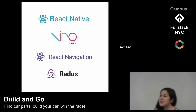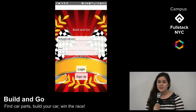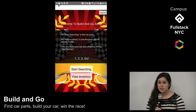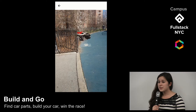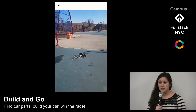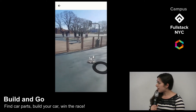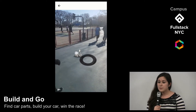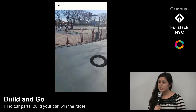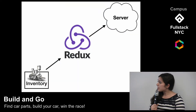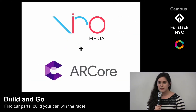To start playing, a user creates an account saved to the database, then is routed to a home screen showing instructions on how to play. Clicking 'Start Searching' begins the AR experience. Once their camera opens and they see the world around them, they can search for parts by moving their camera around. When they find a part, they tap it and it adds it to their inventory. Once parts are added to the inventory, we send the updated inventory data to our server using React Redux.